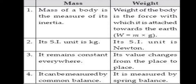The value of weight changes from place to place. Weight is measured by a spring balance, whereas mass is measured by a common balance. Mass is a scalar quantity, while weight is a vector quantity — vector represents magnitude as well as direction.